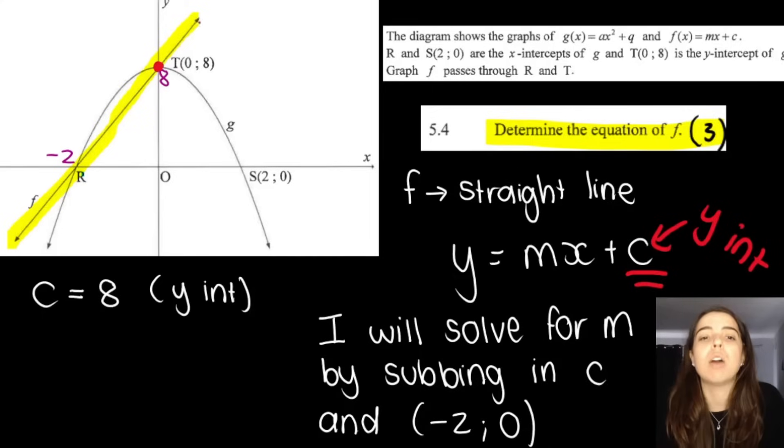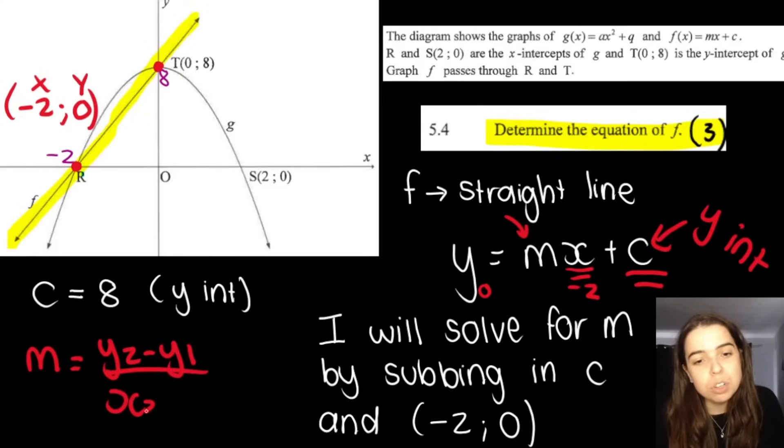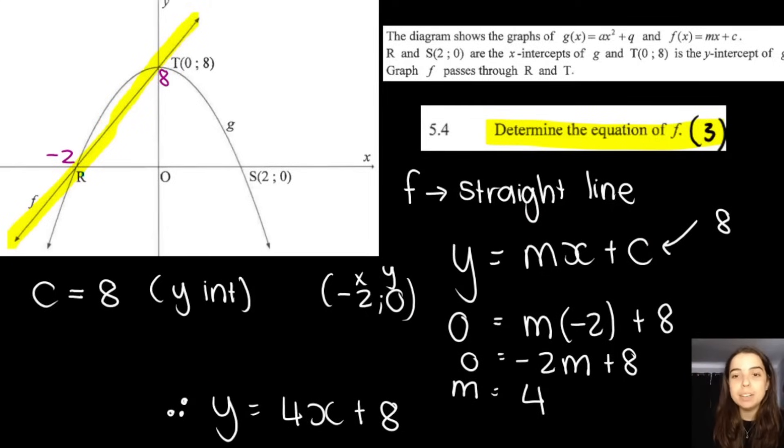If we look at our graph, we also know another point on f. We know this point over here. We obtained that in a previous question, and that was negative 2 and 0. So what I did is I decided to sub in that point. Remember this is the x, this is the y. I decided to sub that into my equation. So in the place of x, I put negative 2 in brackets. In the place of y, I put 0. And I solved for m, which is my gradient. You may also use your gradient formula, which is your gradient is y2 minus y1 over x2 minus x1. So you can see that I subbed in my c value, my y-intercept, I subbed in my points and I got m is 4.